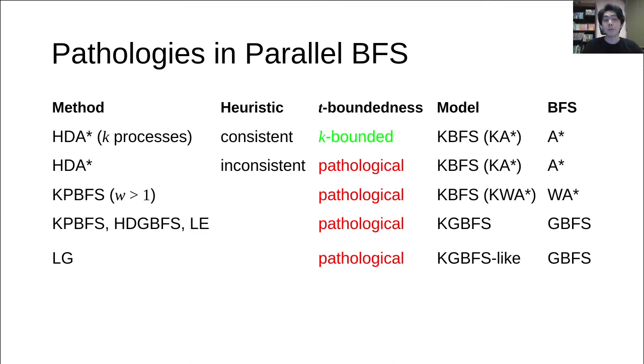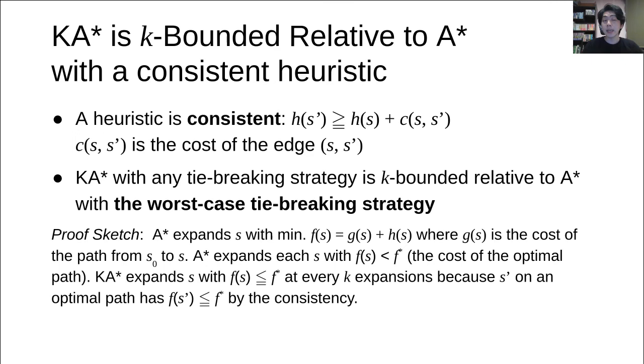In the paper, we showed that parallel weighted A-star methods and parallel A-star methods with inconsistent heuristics are pathological relative to sequential BFS. However, interestingly, parallel A-star methods with a consistent heuristic is K-bounded relative to A-star. Precisely, K-A-star with any tie-breaking strategy is K-bounded relative to A-star with the worst-case tie-breaking strategy. Please read the paper for details.